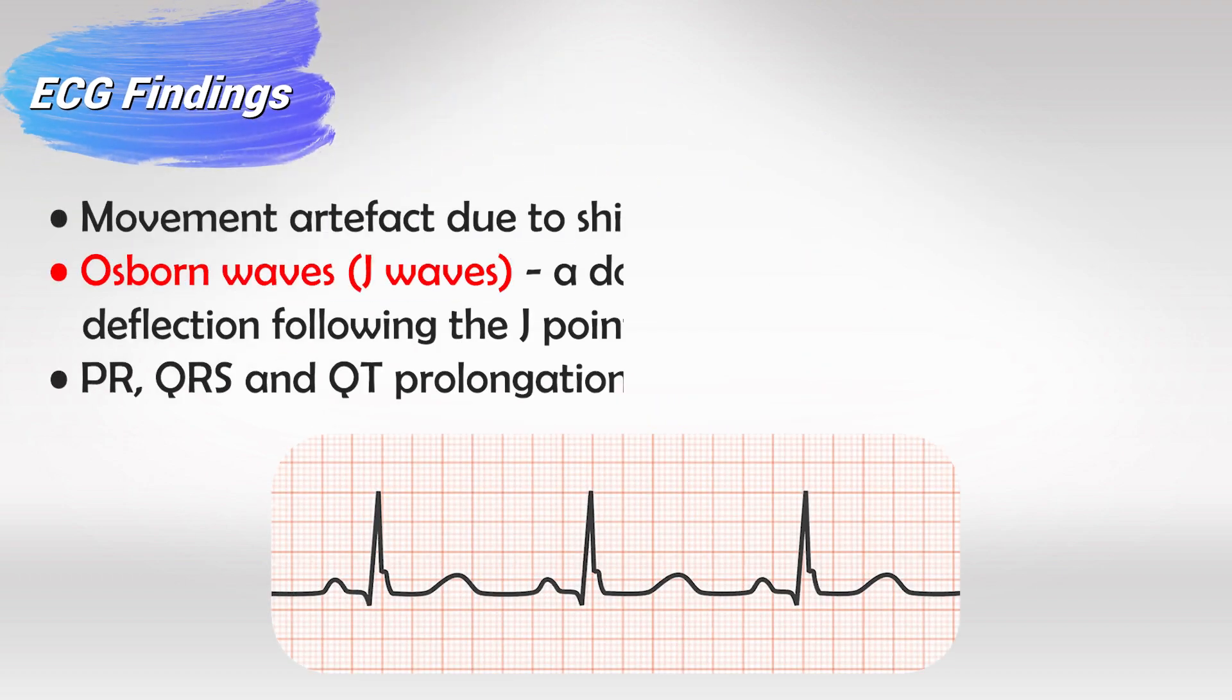You will also see the characteristic J wave, also known as the Osborne wave, and there will be a generalized prolongation of the waves. So the P wave, the QRS complexes, and everything else will be looking as if it was stretched.